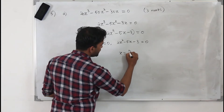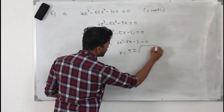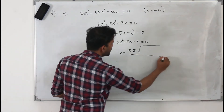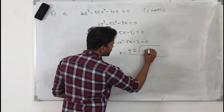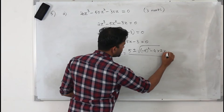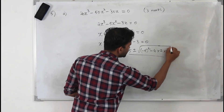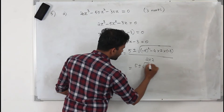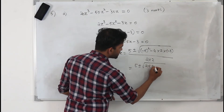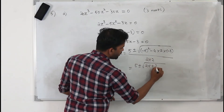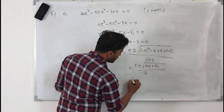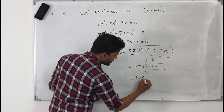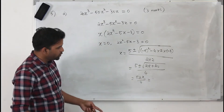So x equals minus b plus or minus square root of b squared minus 4ac, divided by 2a. Already b is minus 5, so minus b will be positive 5. So we get 5 plus or minus square root of 25 plus 24, all divided by 4, which gives 5 plus or minus square root of 49, which is 7, divided by 4.